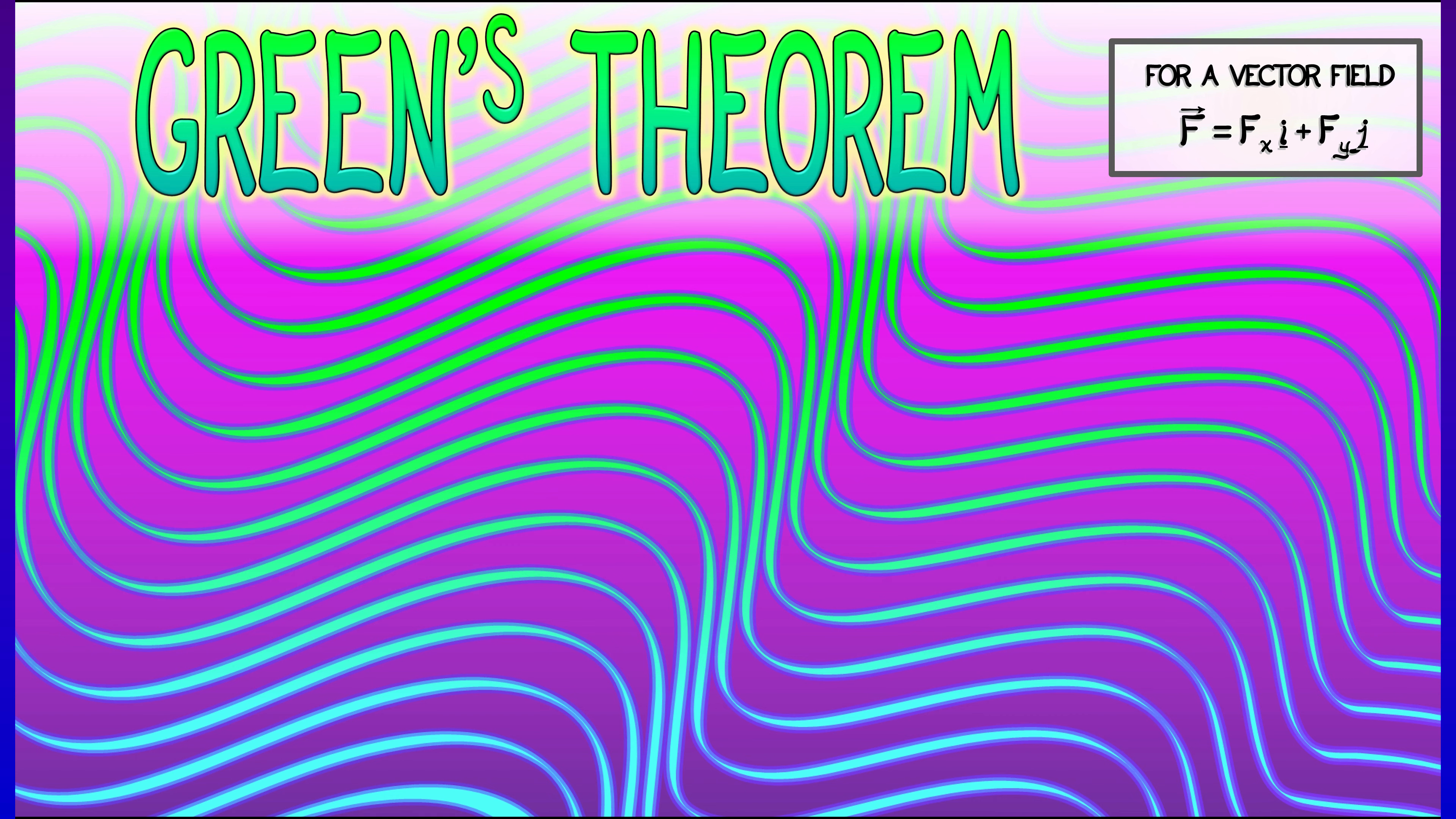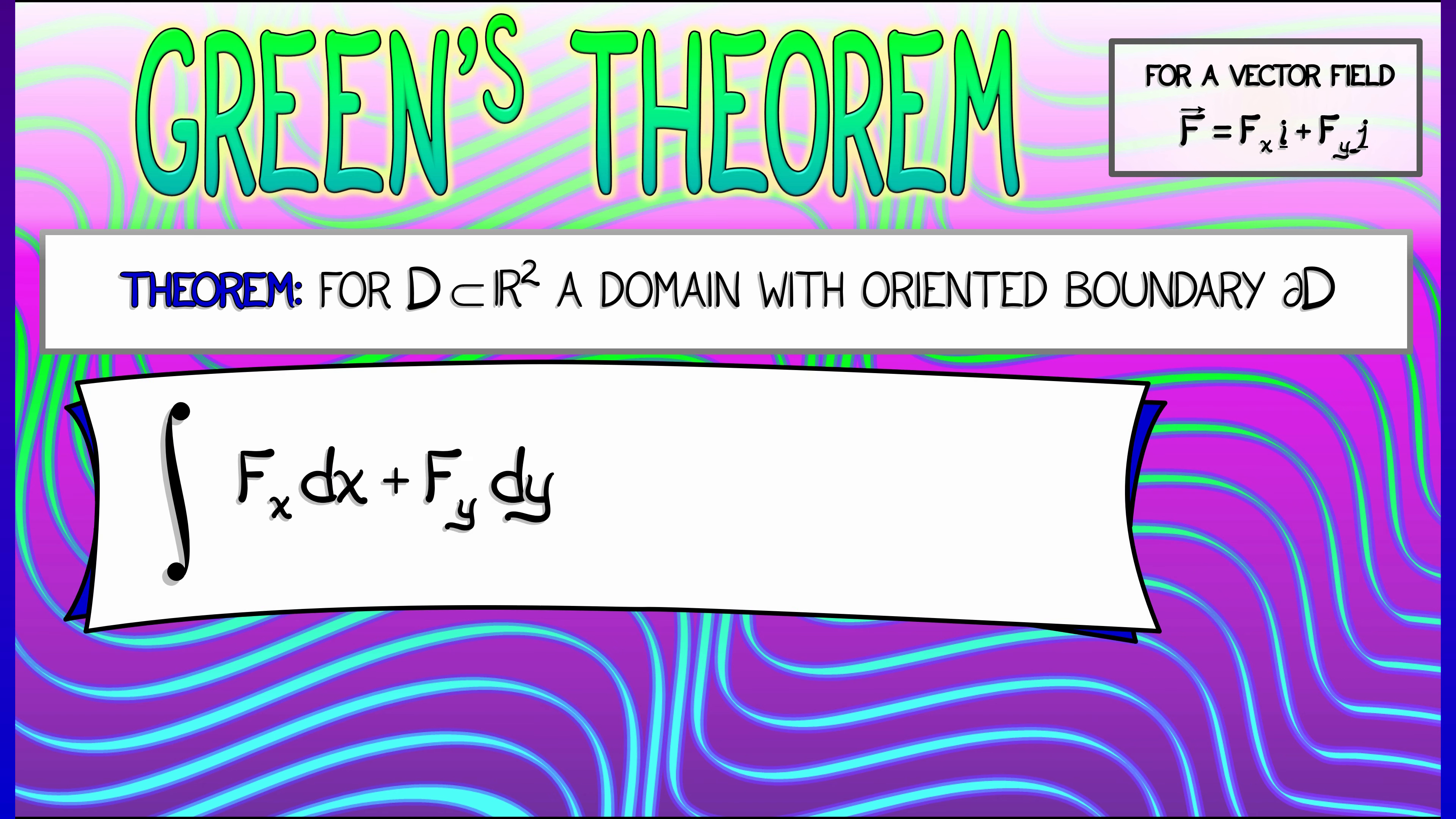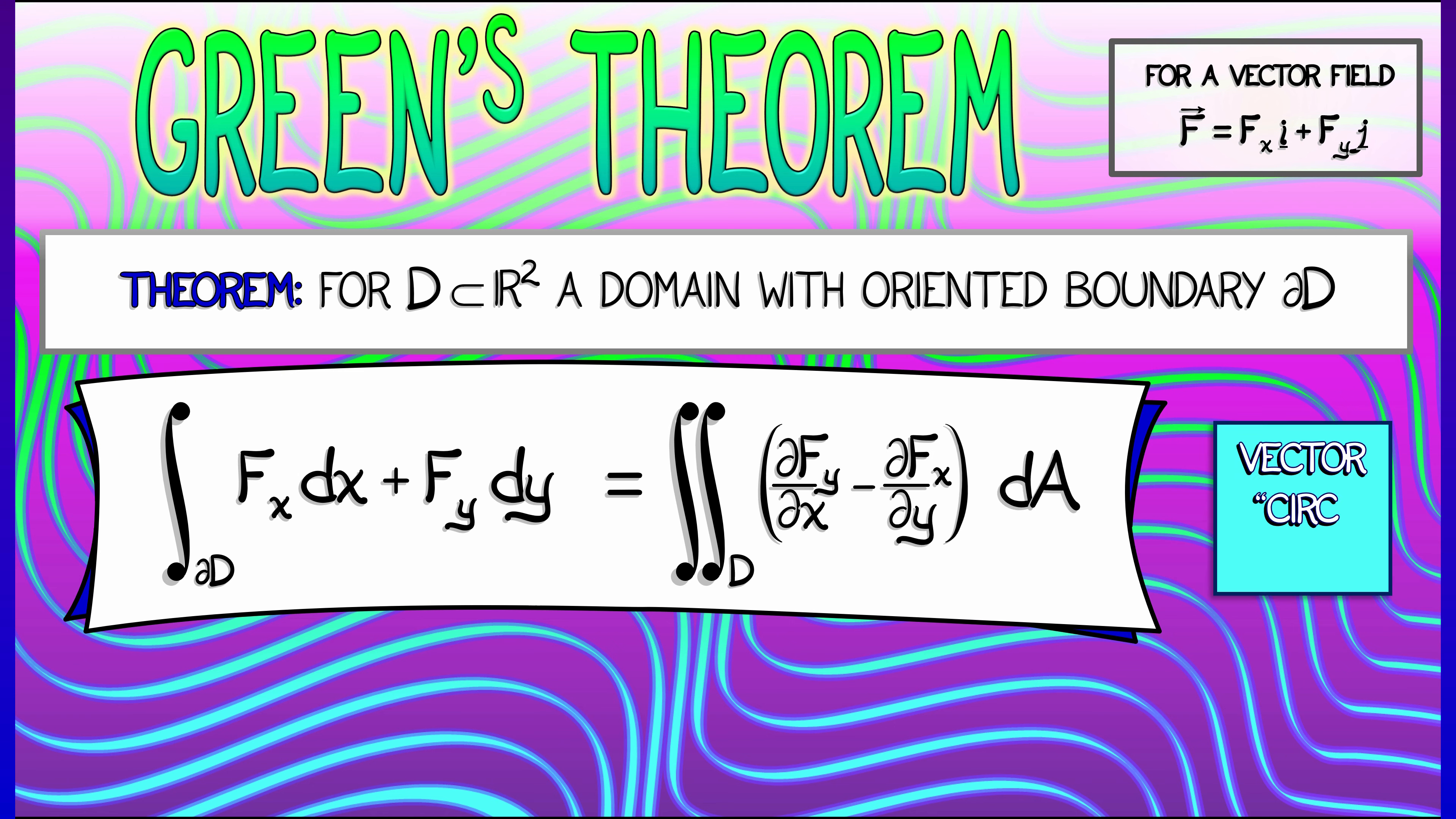We have a domain D in the plane with an oriented boundary. Then the circulation version of Green's theorem says that if you want to compute the circulation of F along the boundary of D, if you want to integrate FX dX plus FY dY, then that's the same thing as the double integral over the interior of the circulation density with respect to area.